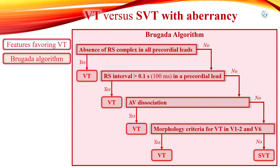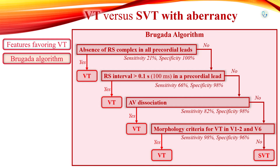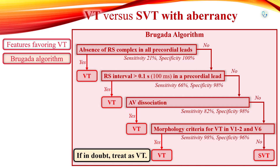The Brugada criteria has high specificity but relatively low sensitivity for the diagnosis of VT. This means that even in the absence of diagnostic features of VT, there is no way to ascertain that the rhythm is SVT with aberrancy. If in doubt, treat as ventricular tachycardia.